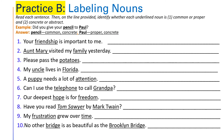The second exercise asks us to read each sentence and on the line provided, identify whether each underlined noun is: one, common or proper, and two, concrete or abstract. For example: 'Did you give your pencil to Paul?' The noun pencil — is it common or proper? It is common. Is it concrete or abstract? It is concrete, because I can touch it and see it. Then Paul — is it proper or common? It is proper. And concrete or abstract? It is concrete.